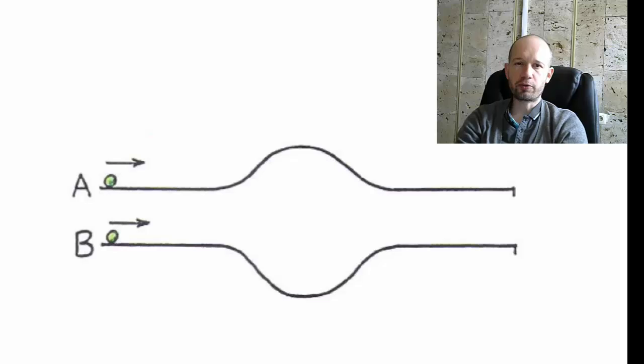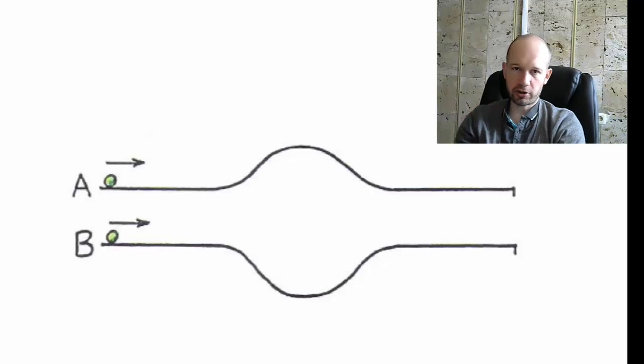And we're assuming that there is no friction between the ball and the track, so it's a frictionless track. And we're also assuming that the initial speed is enough, so that the ball A is able to make it up the hill and then come down. So ball A will clear the track, just as the ball B is going to clear the track.